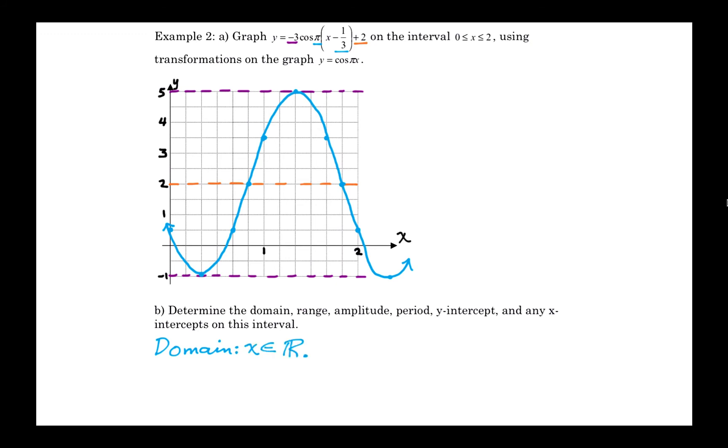So domain, x is any real number. You can take any x value, subtract a third, multiply by pi, take its cosine, multiply by negative 3, and add 2 and you get a valid y value. For the range, y is any real number, but of course it's between negative 1 and positive 5.